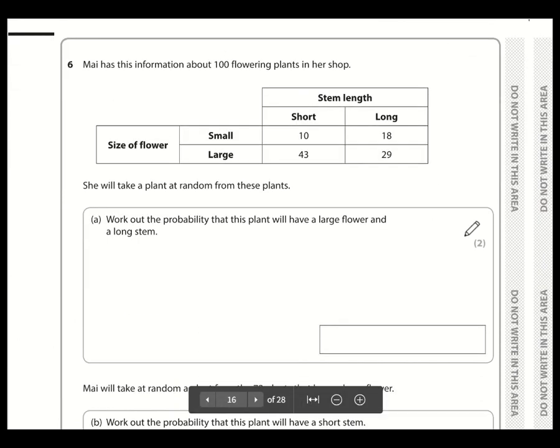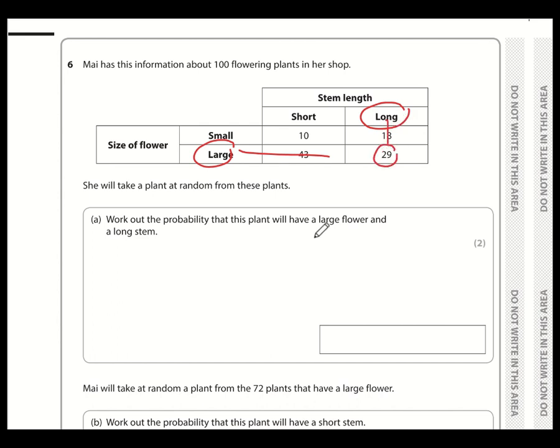Okay, moving on to the next question. Work out the probability that the plant will have a large flower and a long stem. Okay, so stem length long, size of flower large. We can see that that is 29 out of how many? Well, we need to add the 10 plus the 13 plus the 43 plus the 29, which is 100. And that is our answer as a fraction. This can't be simplified because 29 is prime. So that's 29 out of 100.